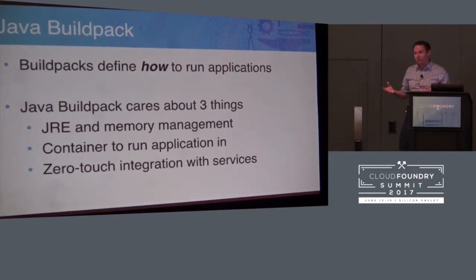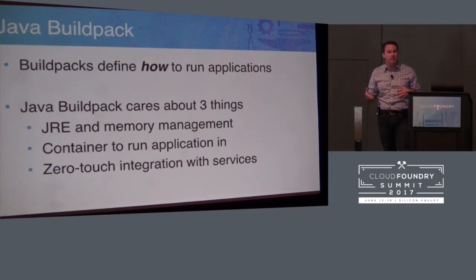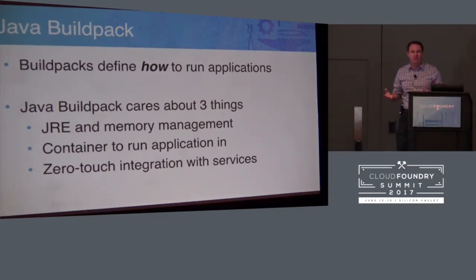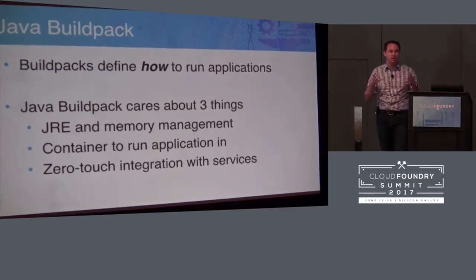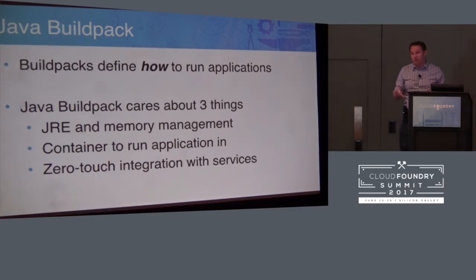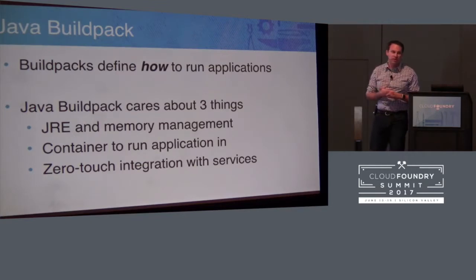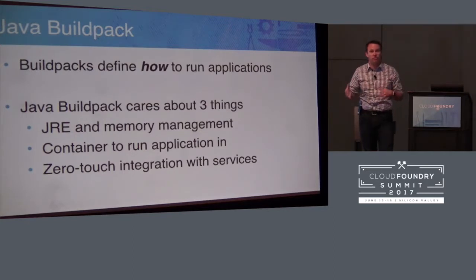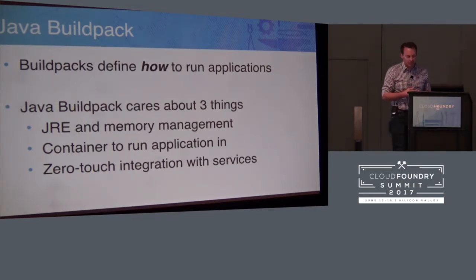The Java build pack cares about three specific things. First is the JRE you're going to run your application with, and specifically how the memory of that JRE is managed inside the container. Second is what container to run your application in - Tomcat, Netty, or Java main. Third is zero-touch integration with services: you as software developers should do as little as possible to integrate with platform services. If you want to hook into an APM, binding the service should be sufficient - the build pack configures everything else.